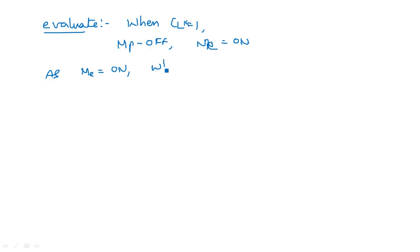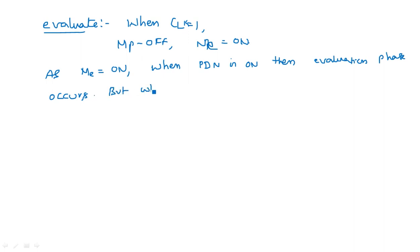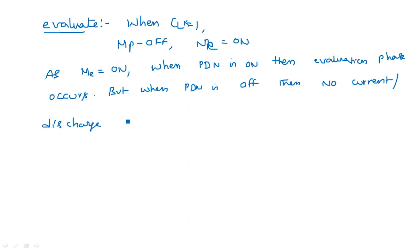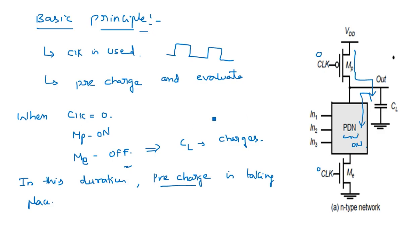When ME is ON and the pull-down network is also ON, the evaluation phase occurs. But when the pull-down network is OFF, no discharge occurs — the capacitor will not discharge and the evaluation phase will not occur. So, to accomplish the evaluation phase, ME must be ON as well as the pull-down network must also be in ON state.